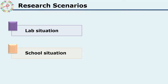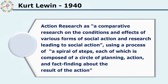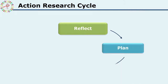He started with the concept of action research and basically talked about four steps, considering action research as a cyclic process. Kurt Lewin defined action research as a comparative research on the conditions and effects of various forms of social action, leading to social action using a process of a spiral of steps, each of which is composed of a circle of planning, action, and fact-finding about the result of the action. From his definition we can see there are four clear-cut steps in the cyclic process: plan, act, observe, and reflect.